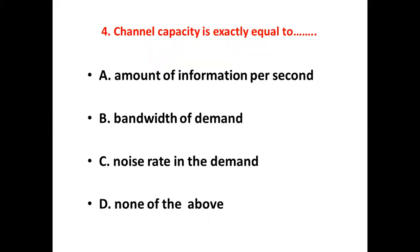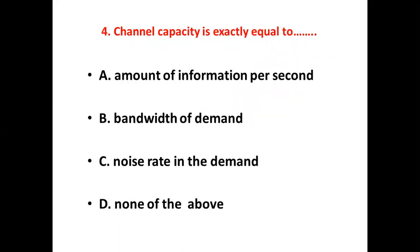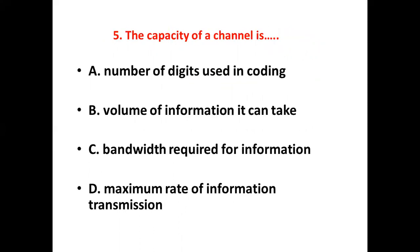Fourth bit. Channel capacity is exactly equal to dash. Option A: Amount of information per second. Option B: Bandwidth of channel. Option C: Noise rate in the channel. Option D: None of the above. Answer: Option A, Amount of information per second.